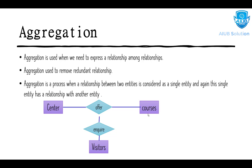Next, we have aggregation. Aggregation is used when we need to express a relationship among relationships. In a normal database design, we can create relationships between entities, but directly creating a relationship between two existing relationships is not possible. If in our database we need a relationship between relationships, then we use aggregation. Aggregation is used to remove redundant relationships that would otherwise be created.